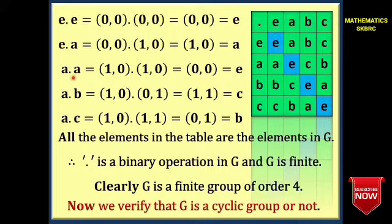A·A: (1,0)·(1,0) = (1+1, 0+0). Since 1+1 = 2 and Z₂ uses addition modulo 2, 2 becomes 0. So A·A = (0,0) = E.